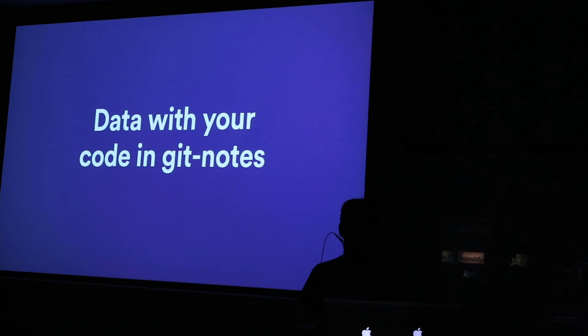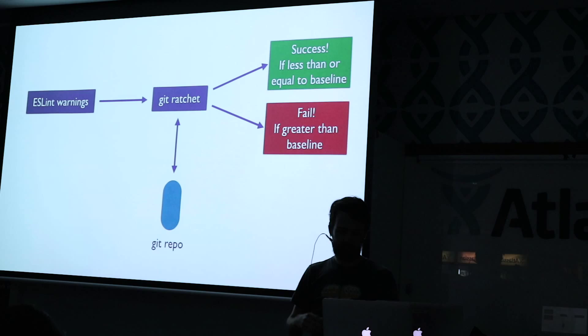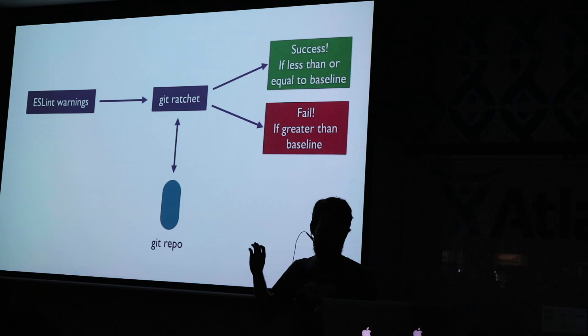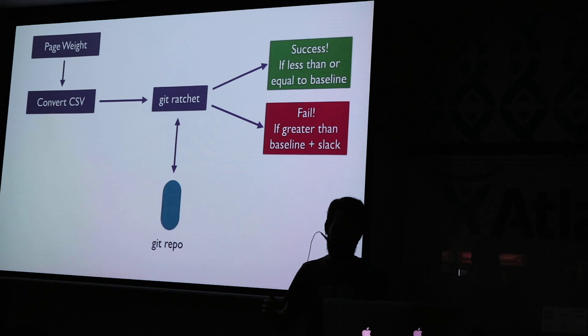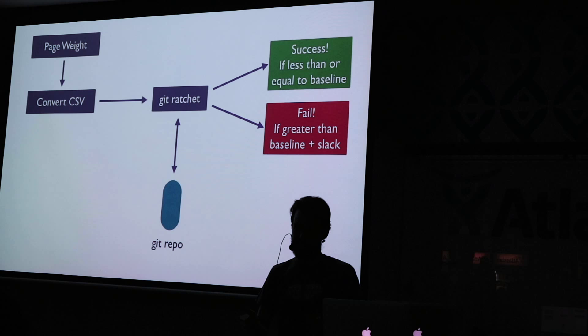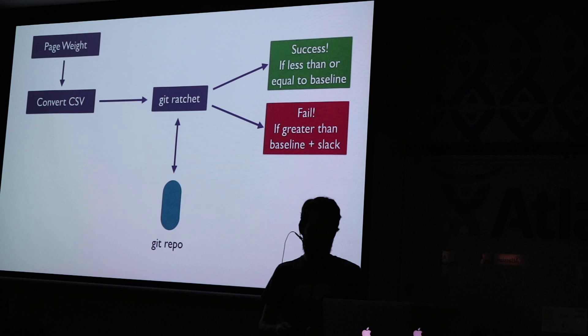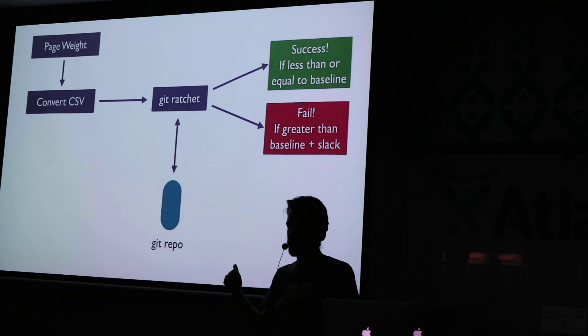Going back to the examples from the start of the presentation: for ESLint warnings, you can check whether new warnings have been introduced and fail the build if they have. For page weight, we do a bit of data transformation and introduce this concept of Slack, where we give people about a 10k window — they can add up to 10 kilobytes of extra JavaScript and CSS over the previous baseline. But if they try to go beyond that, it fails. So if you do a small bug fix and change a couple of lines, it won't materially change things. But if someone decides to add a large library onto the page, the build goes red.